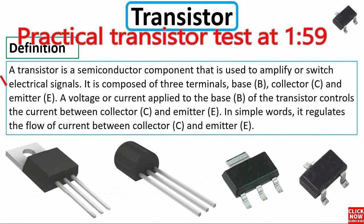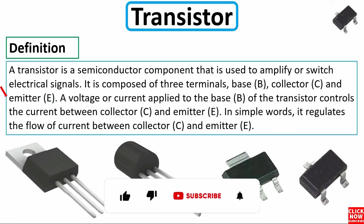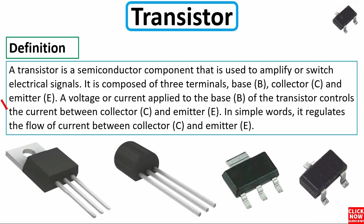It is composed of three terminals: base, collector, and emitter. A voltage or current applied to the base of the transistor controls the current between collector and emitter. In simple words, it regulates the flow of current between collector and emitter.